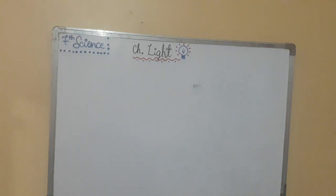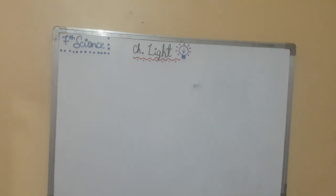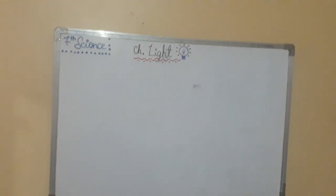Good evening everyone. Welcome to the YouTube channel Just Information. I hope you all are fine. Today we will learn Class 7 Science Chapter Light Part 4. In the first part we learned Phenomenon 3 and Phenomenon 4 of light and electric bulb. Now in this part we will learn about Fluorescent Tube and Shadows, Light, and Images. This is the last part of this chapter.